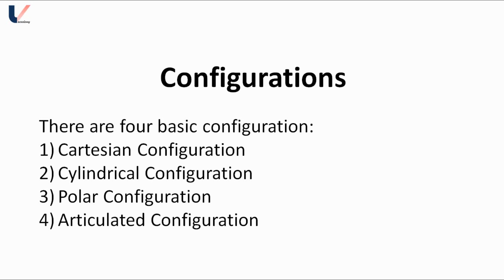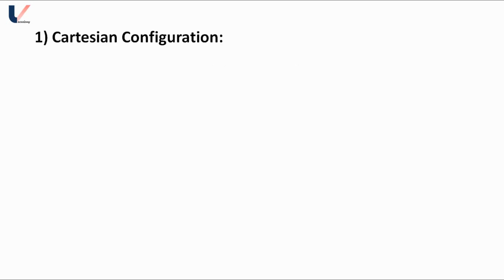Let's start with the first configuration, the Cartesian configuration. As we have already studied in the previous lecture, three degrees of freedom, hence three joints, are required to position an end effector in 3D space. In Cartesian configuration, all three joints are prismatic joints or sliding joints. Look at this diagram over here.